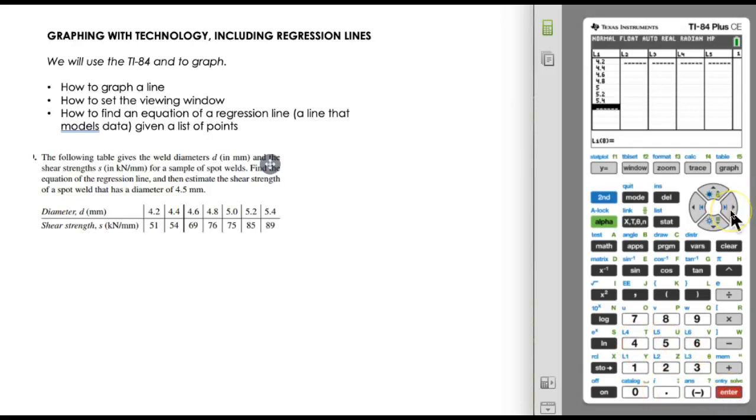Then I want to arrow to the right for the Y list of values, or in this case is S. So I'm going to type in those numbers in the second list. We've got 51, 54, 69, 76, 75, 85, and 89.